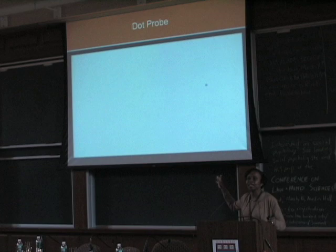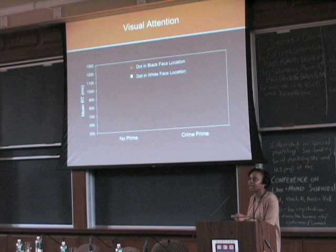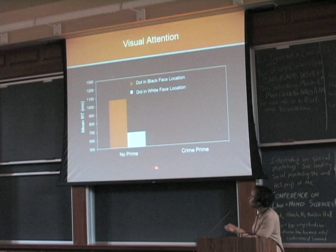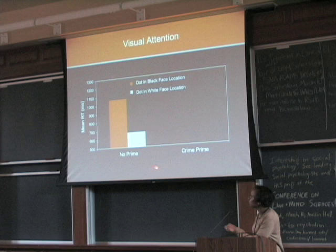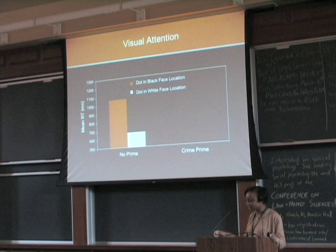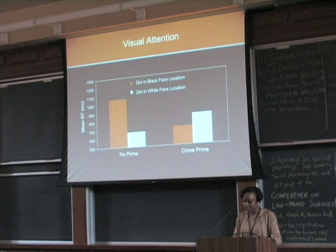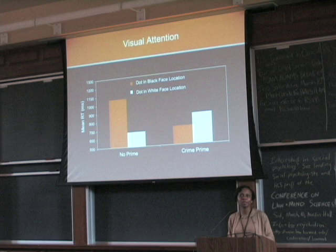So here are the results. Along the vertical axis we have the mean reaction time to locate that dot on the computer screen. When they're not primed with any crime images at all, they're faster to locate the dot when that dot is placed near the white face than when it's placed near the black face — they're faster because they're looking at the white face. So when there's no manipulation at all, there's an in-group bias going on where white faces are attracting white study participants. But when the students are primed to think of crime, we get just the opposite effect — they look at the black face. As expected, exposing people to the crime-relevant objects placed the black male faces under surveillance.